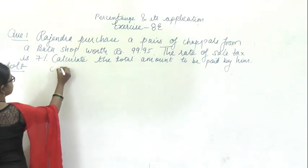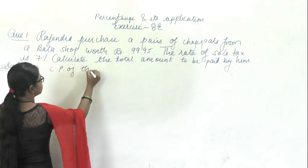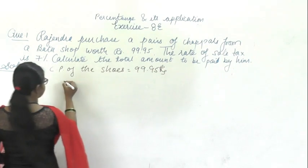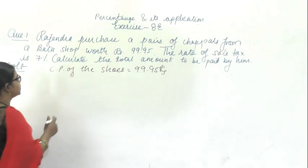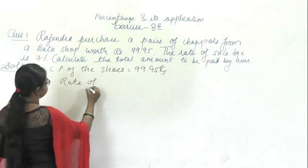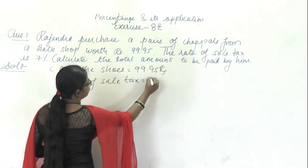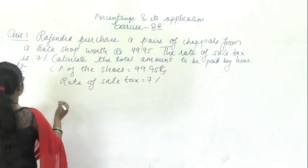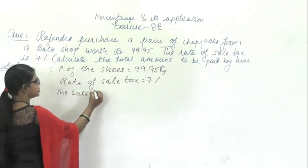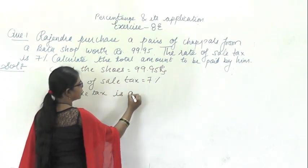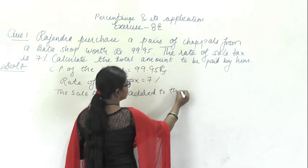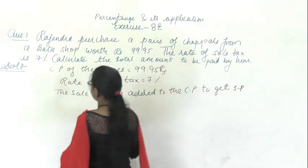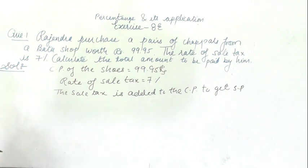So what is given to you? The cost price of the shoes is 99.95 rupees. And the rate of sale tax is given to you as 7%. You have to calculate the total amount paid by him. The sale tax is added to the cost price to get the selling price.